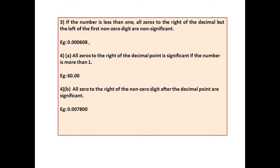Rule number 4b: All zeros to the right of the non-zero digit after the decimal point are significant. For example, in 0.007800, all zeros to the right of the non-zero digits are significant.